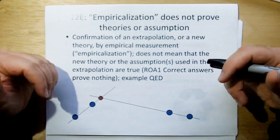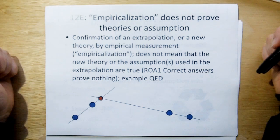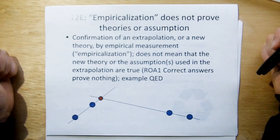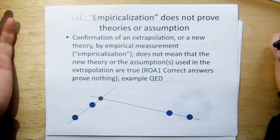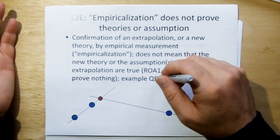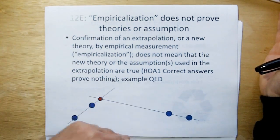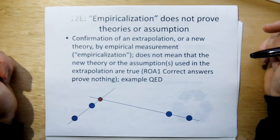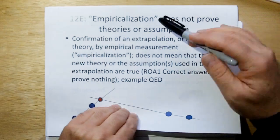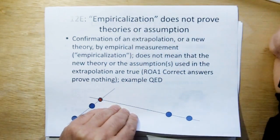And another example is quantum electrodynamics. Quantum electrodynamics gets the right answers by assuming charges from the future come back to the past and balance out all the equations. Well, that doesn't mean it's true. It just means we get the right answer. But until we actually observe those charges coming back from the future, we can't trust those to be real. But we can still use the models because they give us the right results, but that doesn't mean charges, in fact, do come back from the future. So we have to be careful that empiricalization does not prove the theories or assumptions that went into empiricalizing the models.